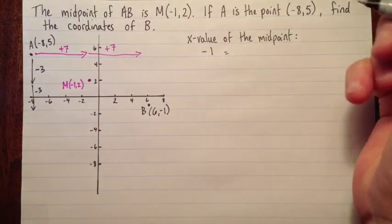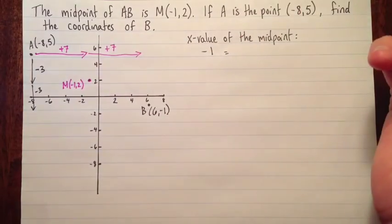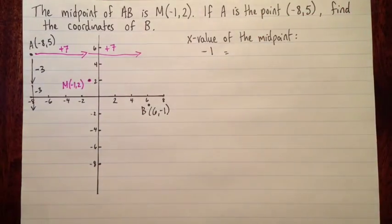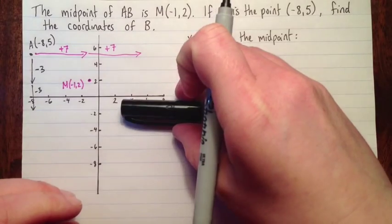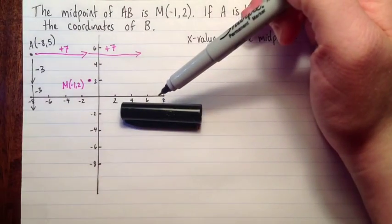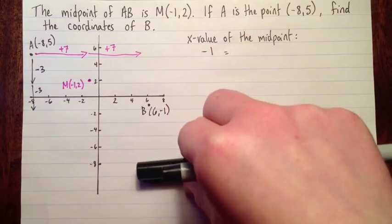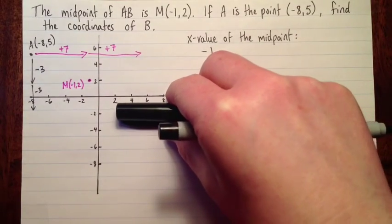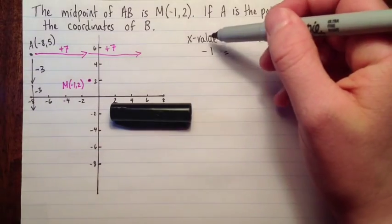But we know that negative 1 from the midpoint formula, it's just the average of the other two x values. So I'm going to cover this up with my pen lid now, because we're doing the question a different way. So we want to pretend we don't know the answer here. We should get the same answer as we got this time, but we don't want to use that to find the answer.